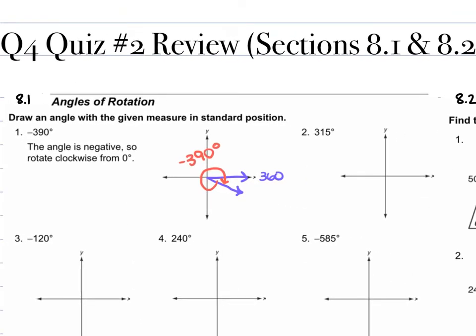For number 2, we're given 315 degrees. Again, we're going to start that initial side on the positive x-axis. From here, we are going to go up and around to 315, so that's about here. Then just draw your circular arrow and designate that it's 315 degrees.